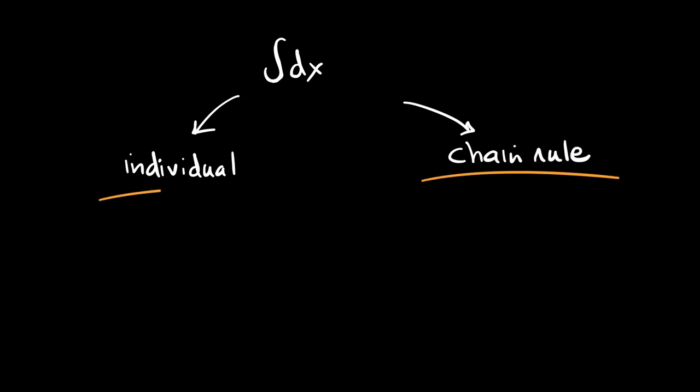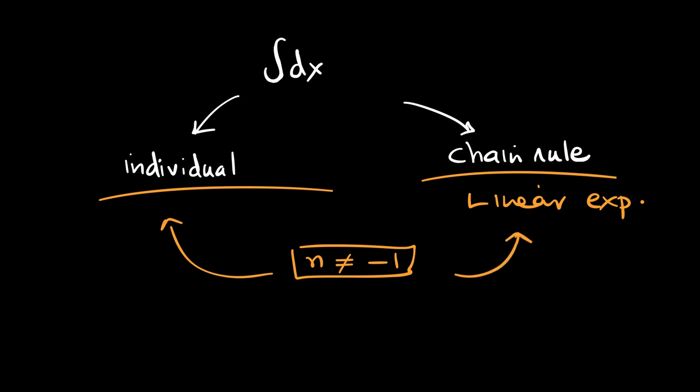So, it does not make a difference whether you do the integration by integrating individual terms or by using chain rule. But, of course, the condition for chain rule has to be met. It should be a linear expression and the rule for power is the same as before. So, the power could be anything but the power should not equal to negative 1.